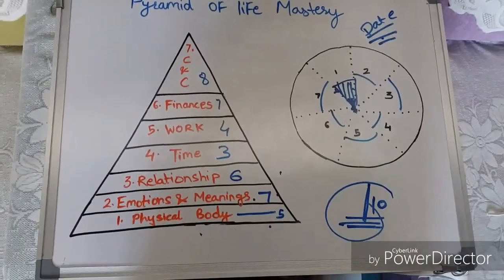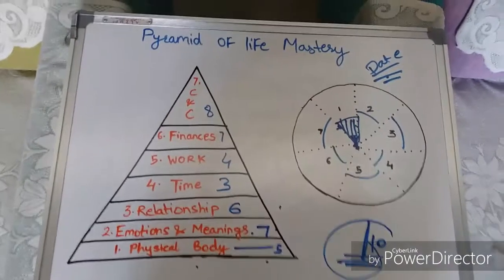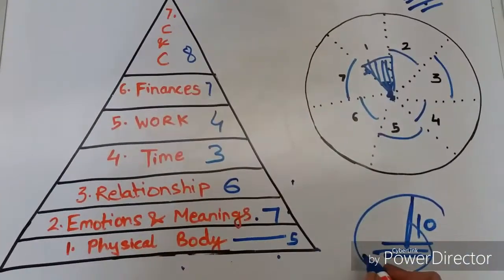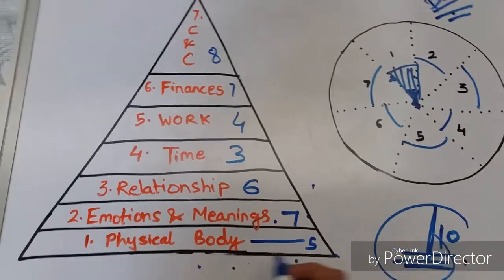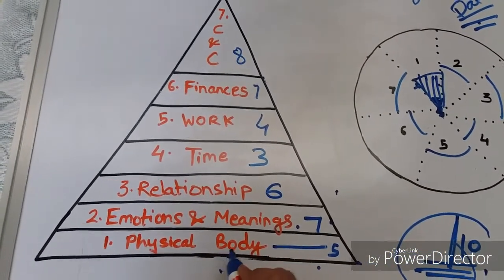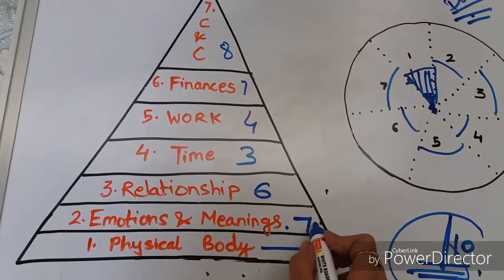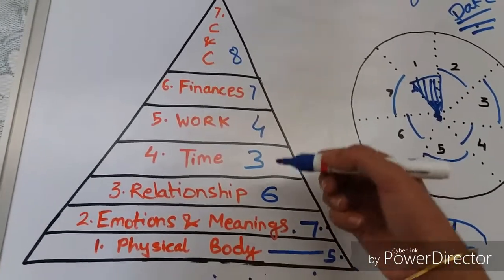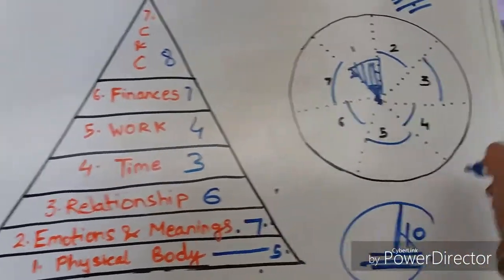So giving yourself a real life check by this pyramid of life mastery is rate every layer of this pyramid out of 10. So rate like I am giving my physical body 5 out of 10. Then emotions and meaning 7 out of 10. Similarly you rate every layer of this pyramid and you can even draw it like this.